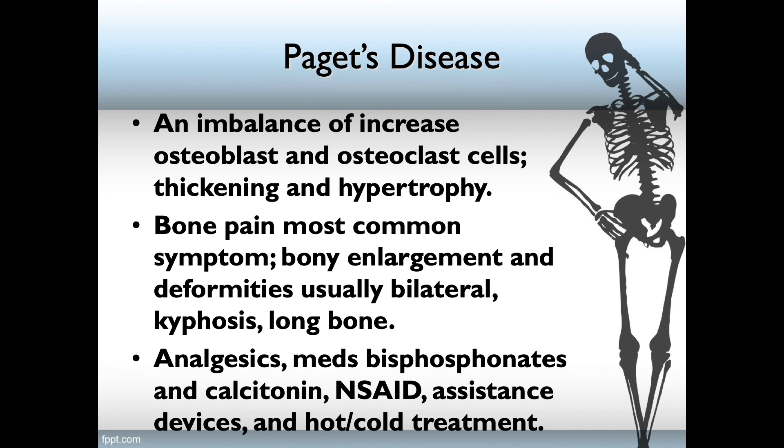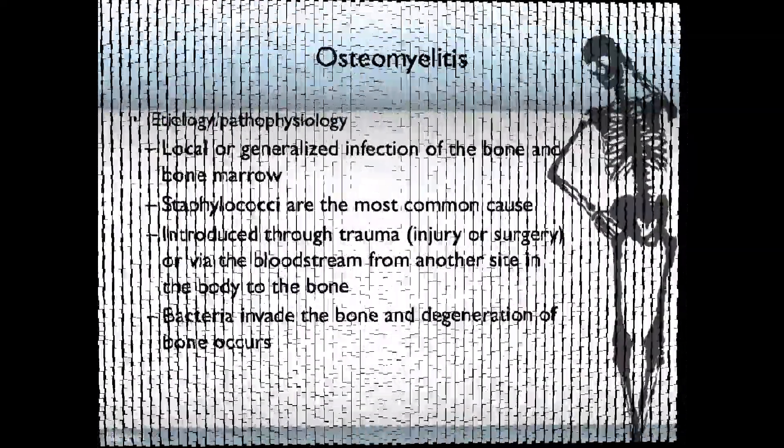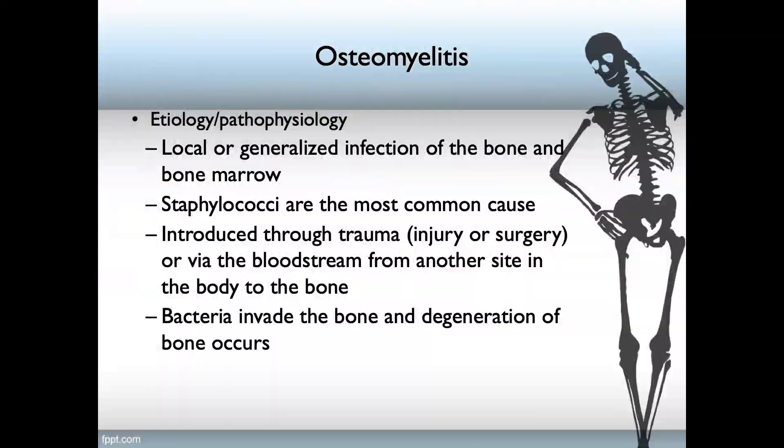When the bone itself gets infected, this is known as osteomyelitis — therefore a local or generalized infection of the bone and bone marrow. The most common cause are staphylococci. It's usually introduced through trauma, that is injury or surgery, or via the bloodstream from another site. In other words, you have a bloodborne infection and it infects the bone. Bacteria invade the bone, and then degeneration of the bone occurs.